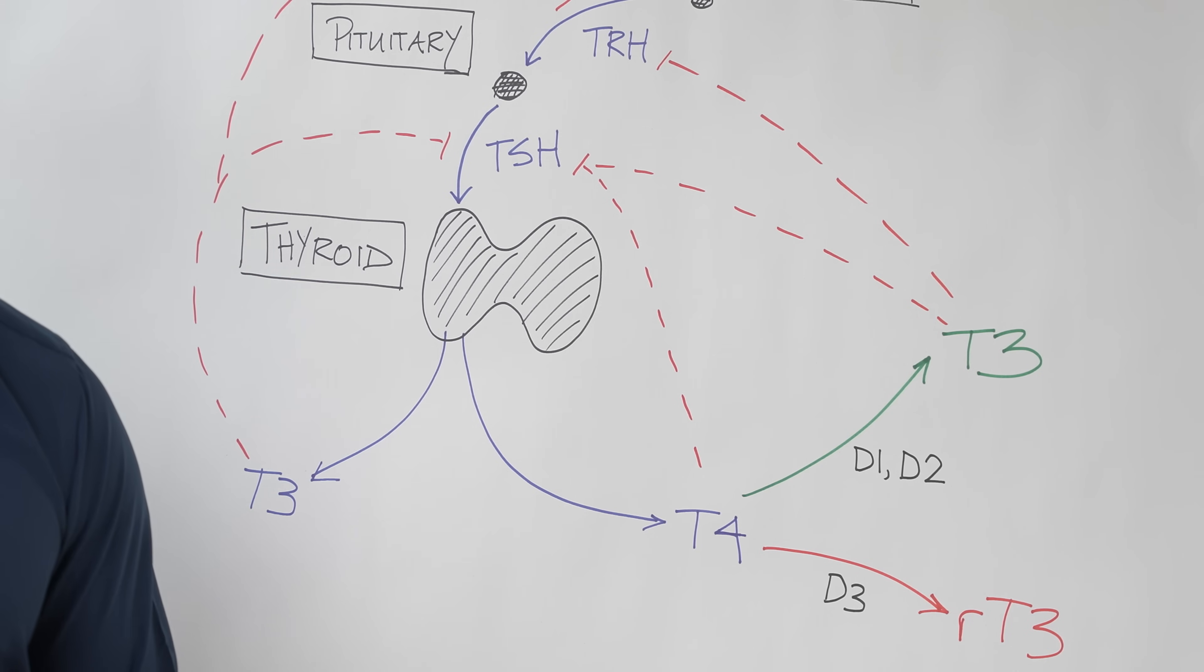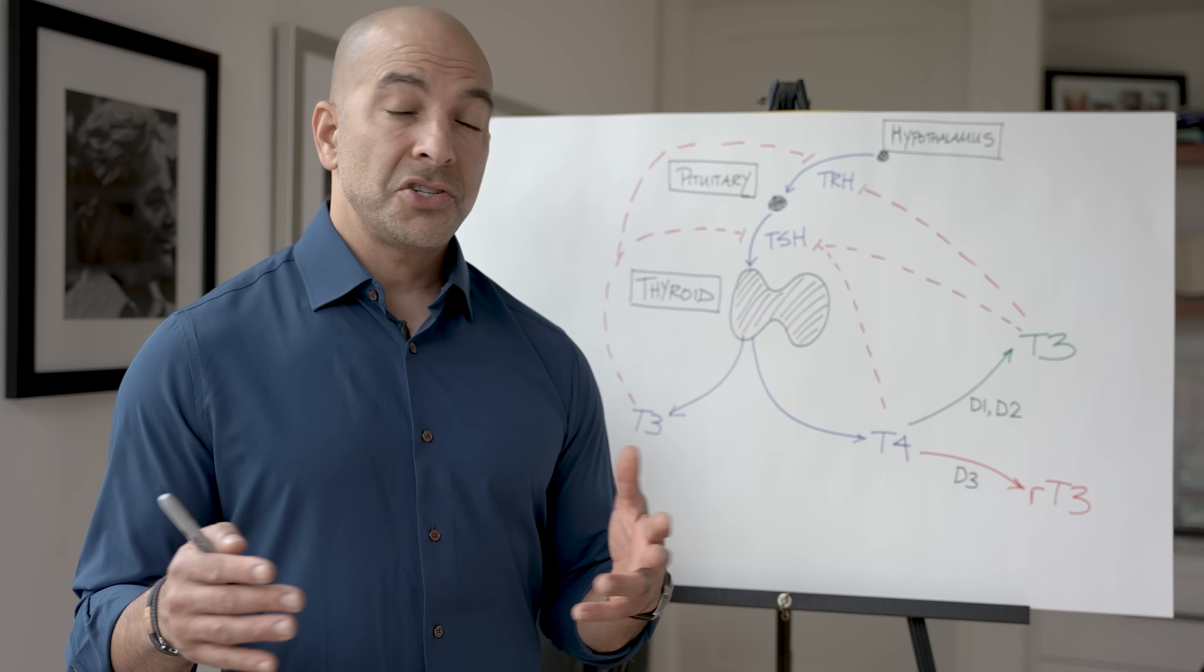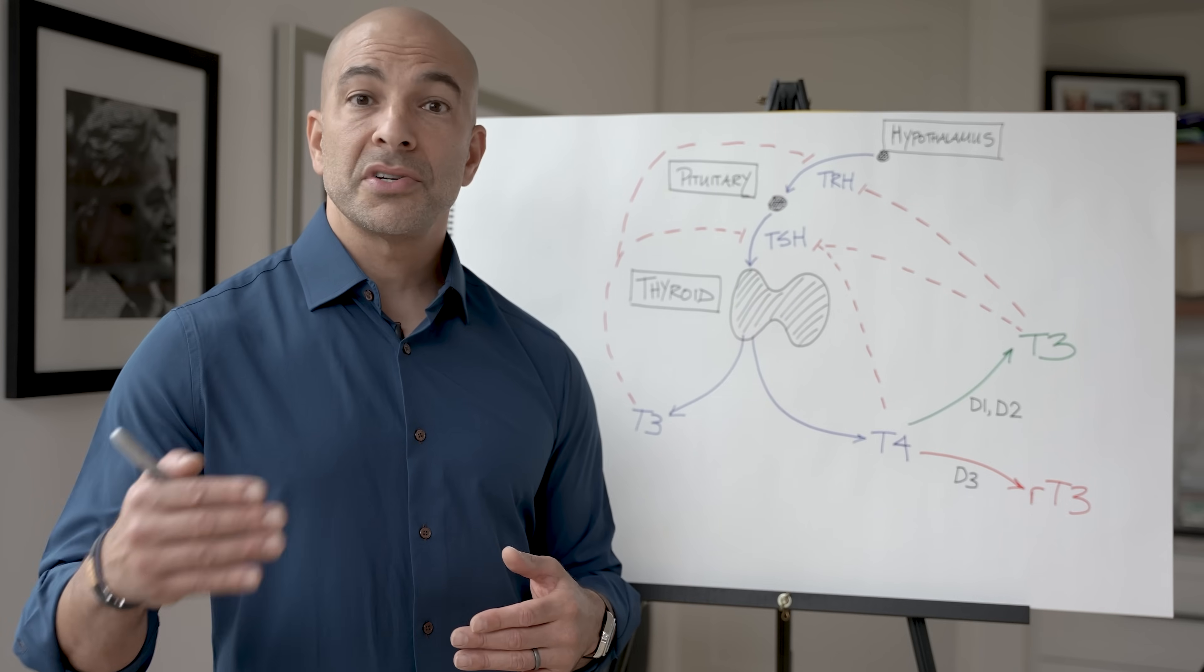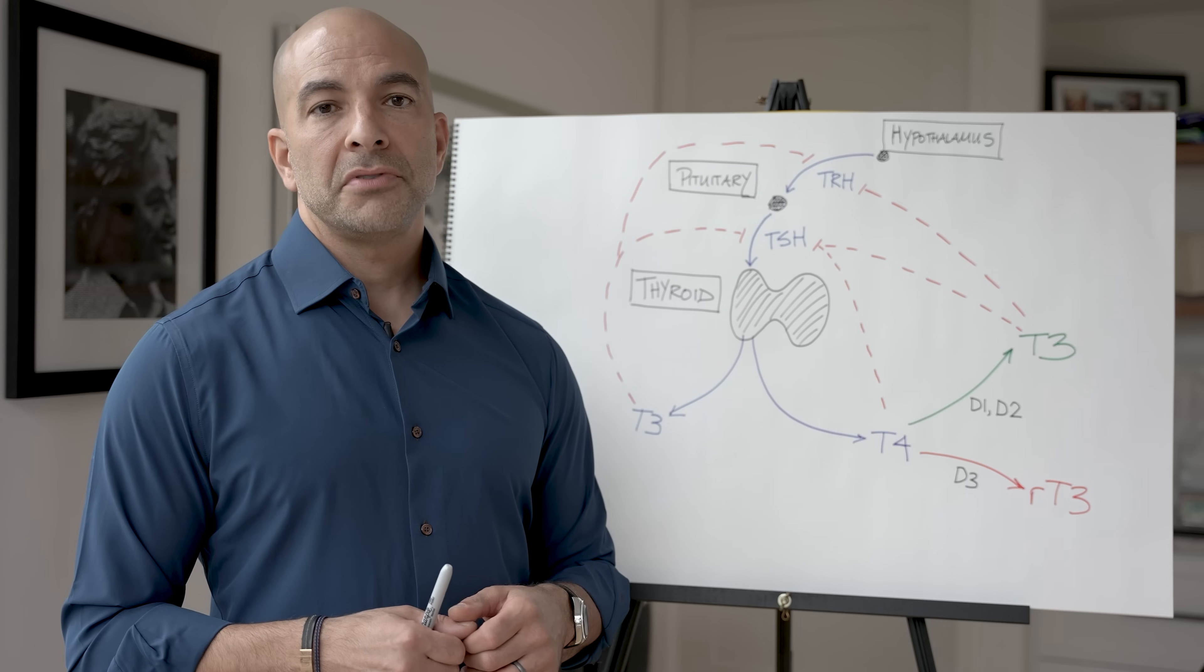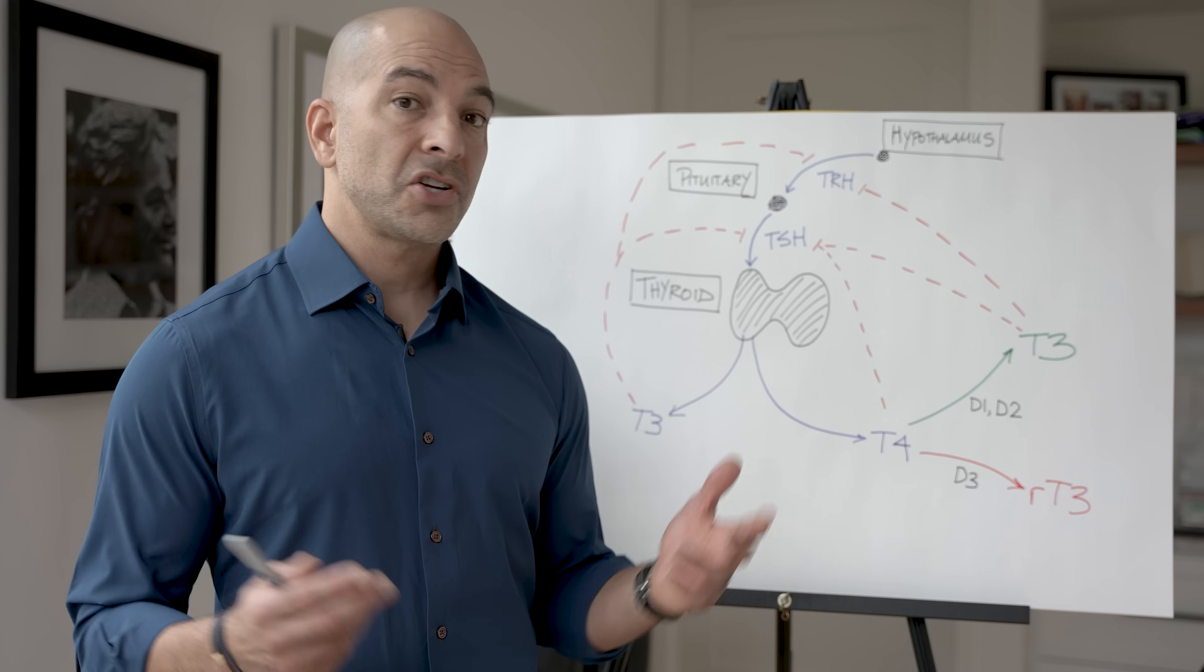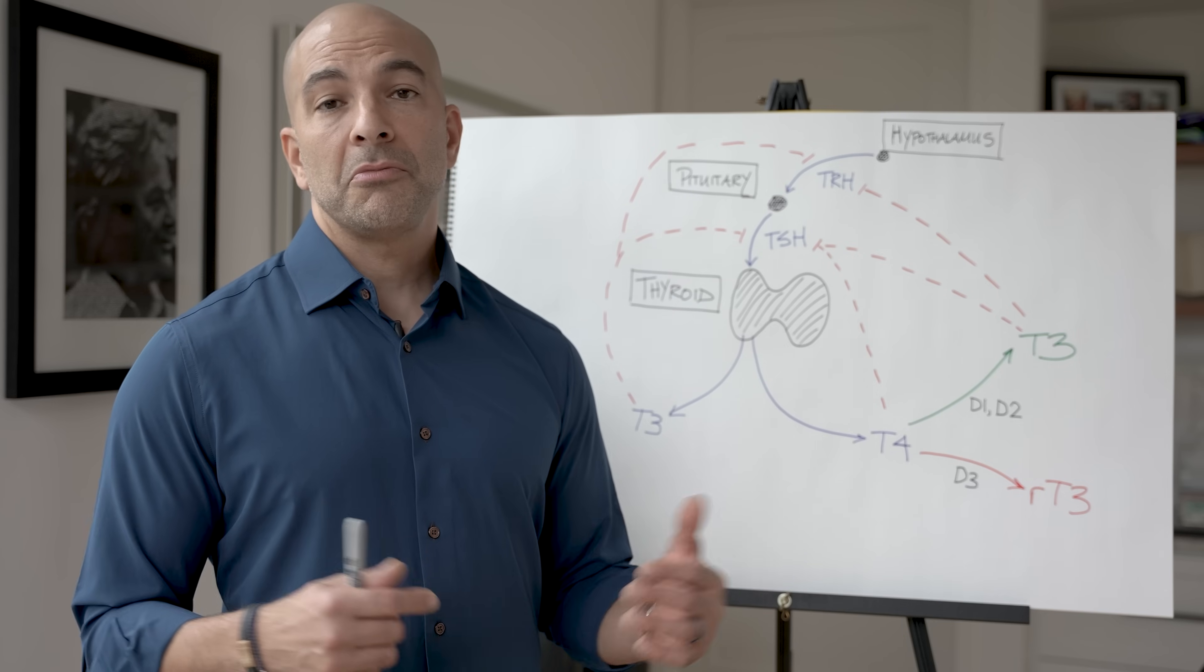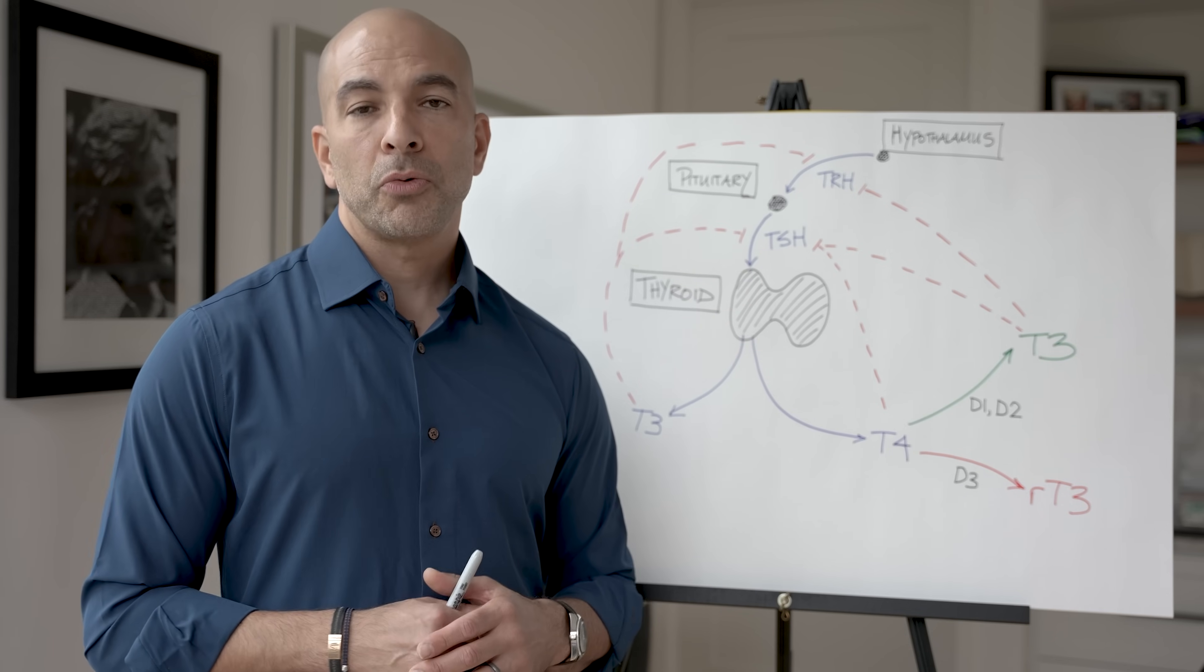So, for example, if a patient shows up to see you and they have the classic symptoms of hypothyroidism and their TSH is elevated, for example, at six or seven, you might give them, say, 75 micrograms of T4, and you might expect to come back and see that TSH at two or three and them feeling better. And many times it works out that way. But unfortunately, it doesn't always work out that way.